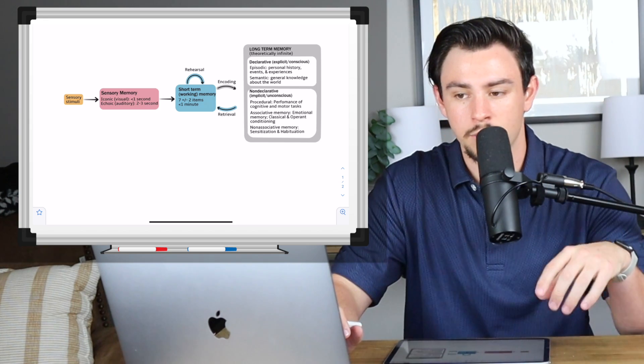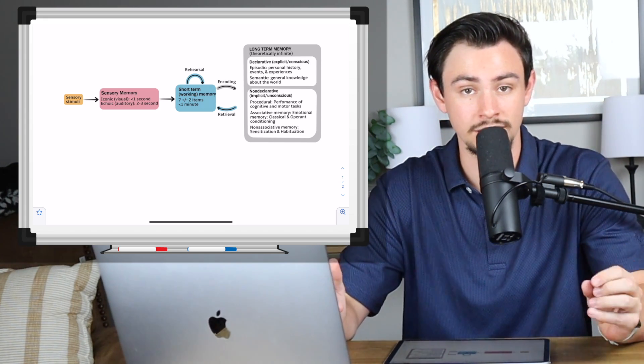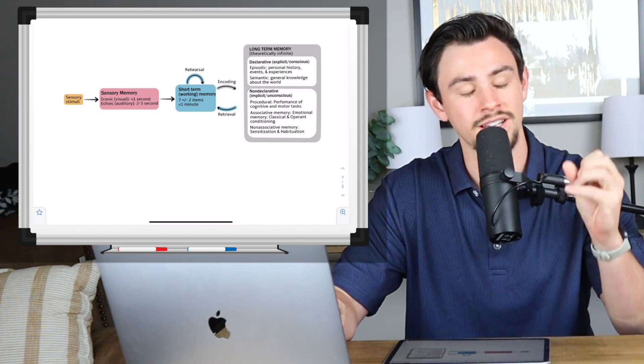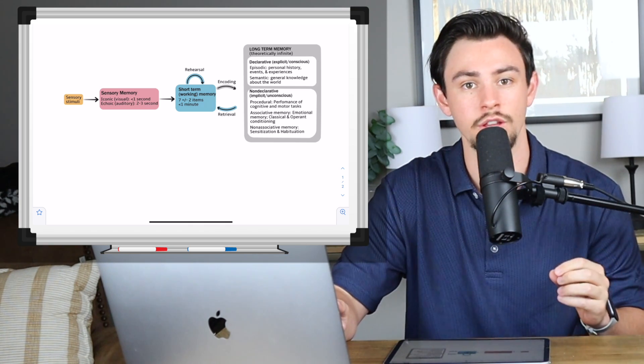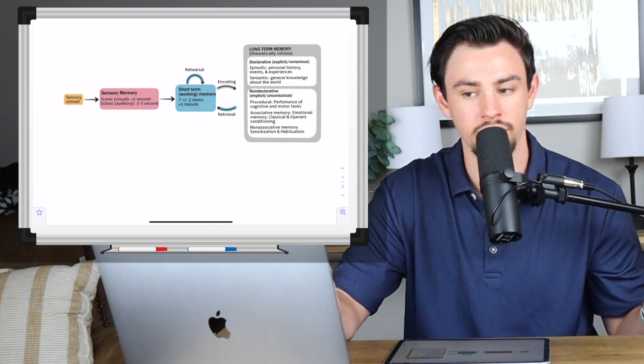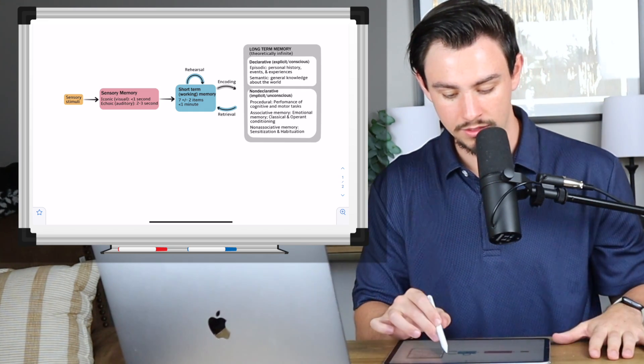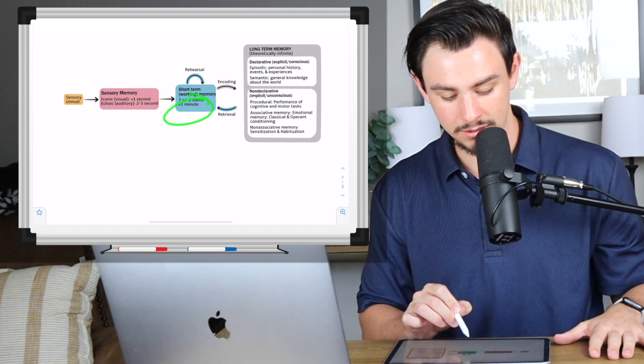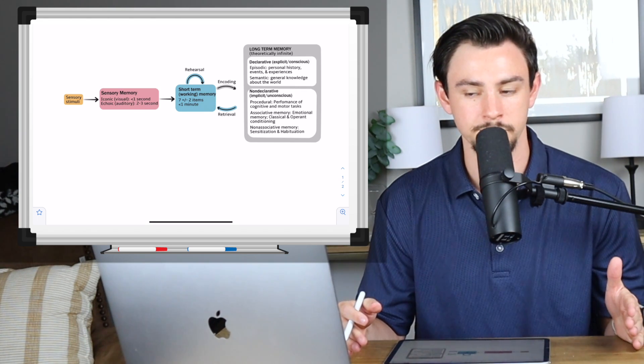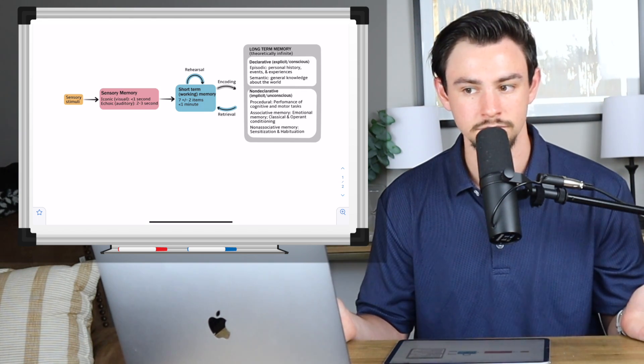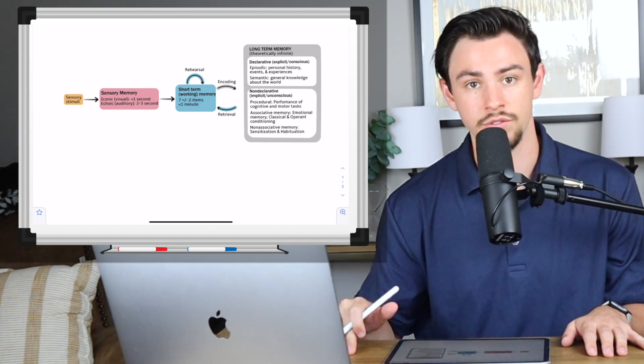We're going to flesh out some topics here and there, but the main thing that I want you to focus on during this video is the timing of these events because that is how the MCAT will typically question you. They'll say that you remembered something for 30 seconds. What type of memory were you using? You will have to know that 30 seconds is less than a minute, but it's greater than a couple seconds. So it has to be short-term memory. It's easy enough, right? But if you don't know it, you're not going to get the question right.